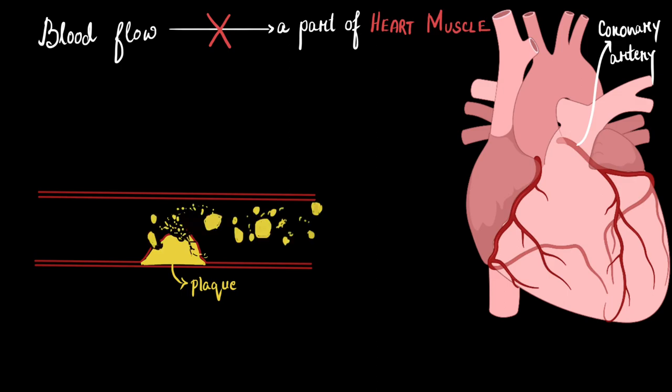Now when this plaque breaks due to high blood pressure it could block the arteries. Let's see how. So this plaque material can flow downstream with the blood and can block smaller arterioles. On top of that this plaque material has the tendency to generate blood clots. They can create or generate this blood clot as soon as they come in contact with the blood.